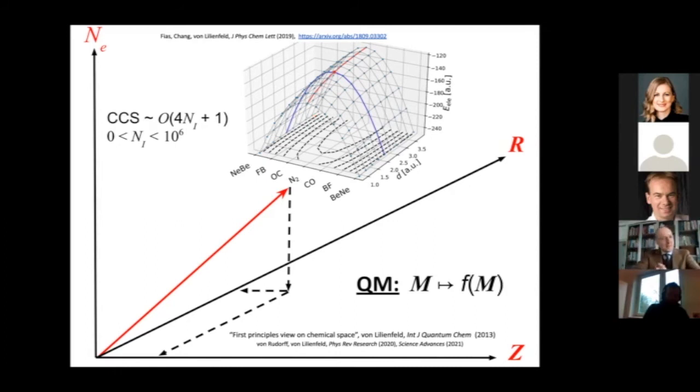If you go to a different nuclear charge combination, then you see the binding curve of CO and BF. This is to show you that chemical compound space, in terms of quantum mechanics, is actually quite smooth. It's not a crazy idea to say I'm going to Taylor expand here. I'm going to do a regression in this space. In reality, you will measure an equilibrium distance, only one point, and for a certain composition.